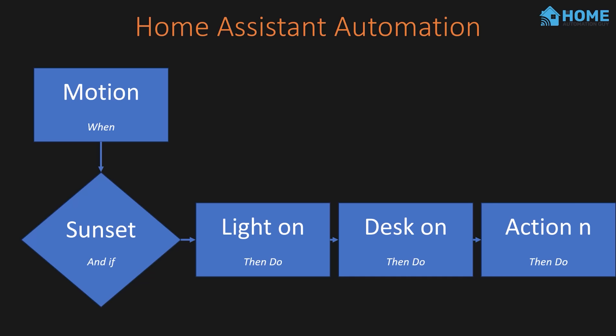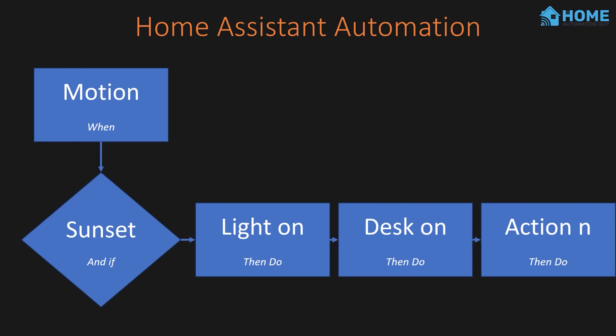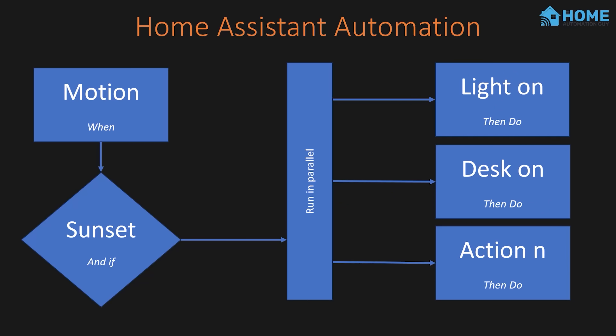That was until one of the actions failed. If that happened, then the automation would stop and not run any of the subsequent actions. Imagine that in this automation there was something wrong with my office lights, so this step fails. Because of the way I've structured the automation, not only does the light not turn on, but the desk power also doesn't turn on because the automation never makes it to that step. I then learned about this option to run actions in parallel, which meant it would run multiple things at once, and if any of them failed to run, it wouldn't affect the other actions.